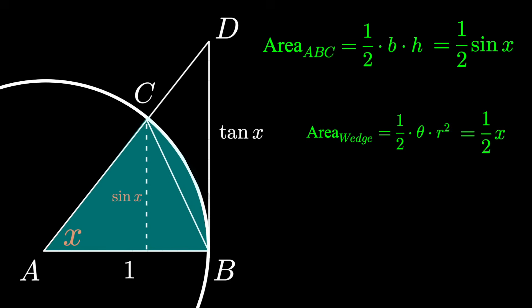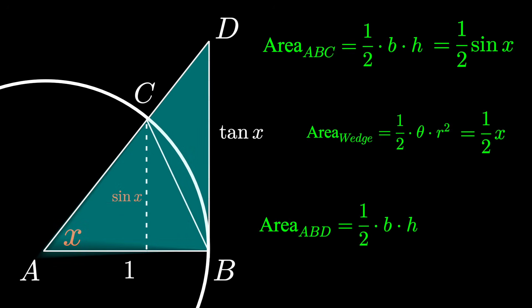What's the area of triangle ABD? Again, the area of a triangle is ½ base times height. That's ½ times 1 times tan X. And since the triangle ABC is contained within the wedge, which is contained within the triangle ABD, we have this nice inequality.